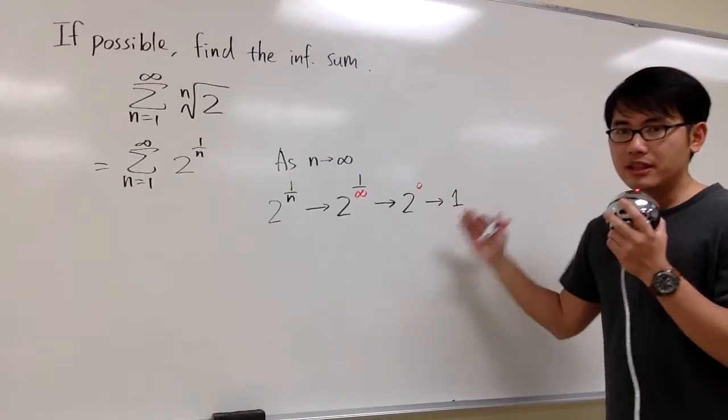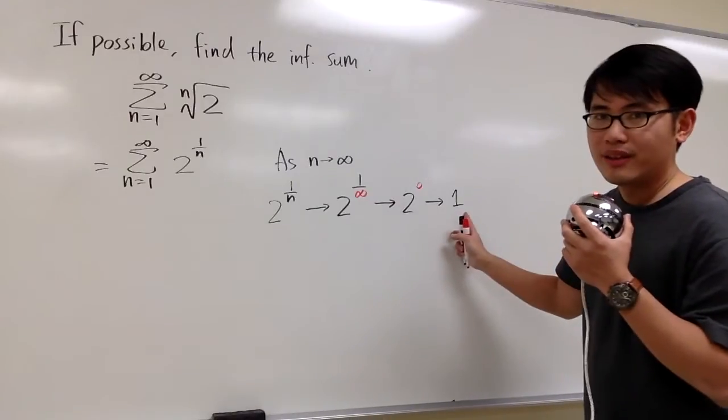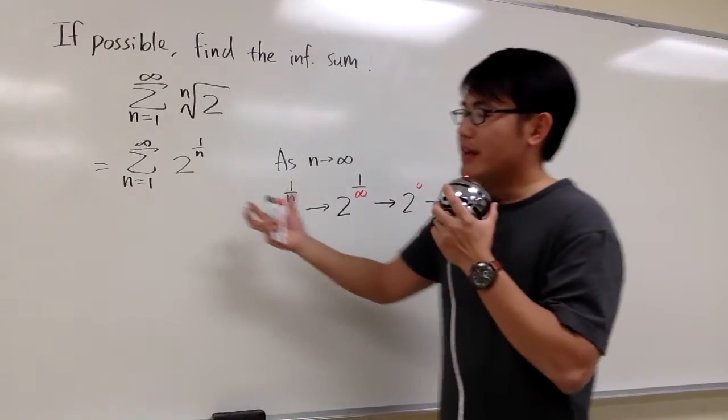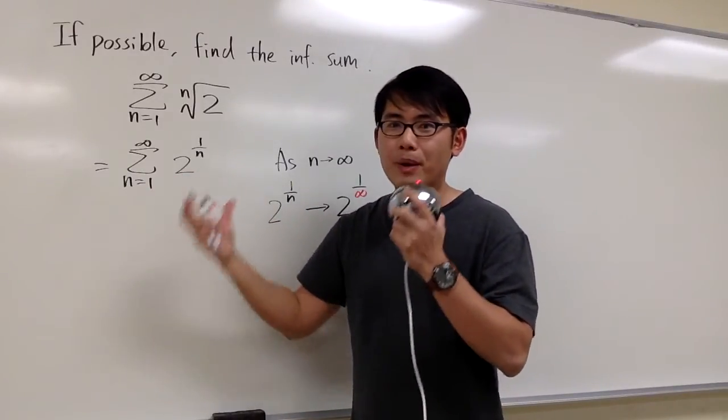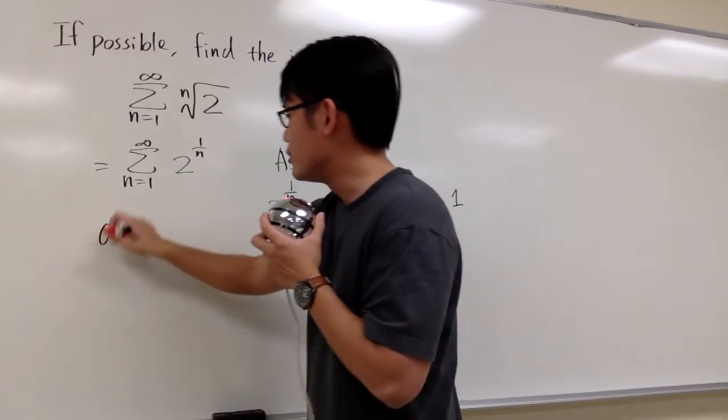And based on this check, we know that this right here is eventually equal to 1. So in other words, eventually we're just going to be adding up a bunch of 1's. So what do we know about this series? This series diverges.